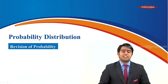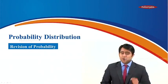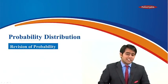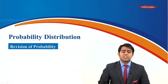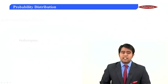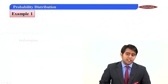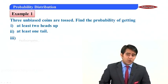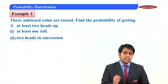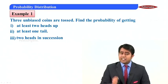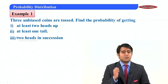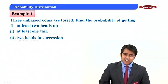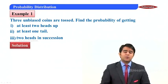Hello students, let us start with the new chapter called probability distribution. Before we start, we will have a revision of probability. The first problem is: three unbiased coins are tossed. Find the probability of getting (i) at least two heads, (ii) at least one tail, and (iii) two heads in succession.